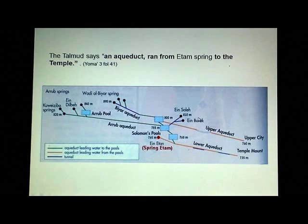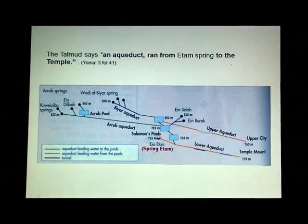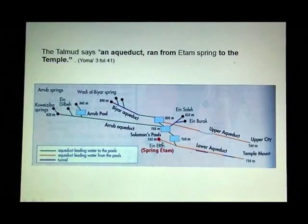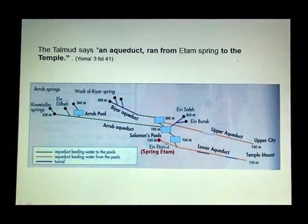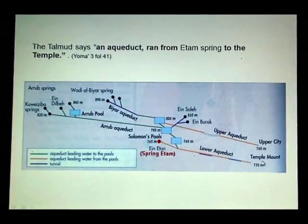The Talmud says an aqueduct ran from Edom Springs to the temple. Now here's a diagram of the springs up near Bethlehem. Solomon's pools are here and here this little red dot is Edom Springs.